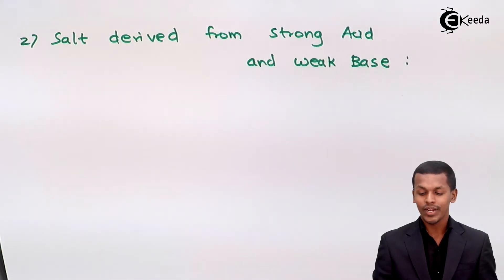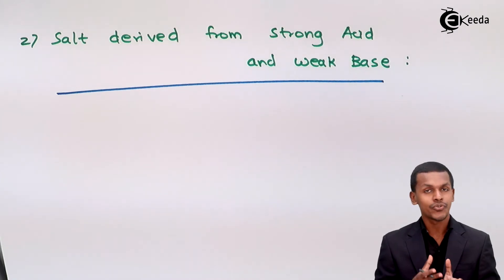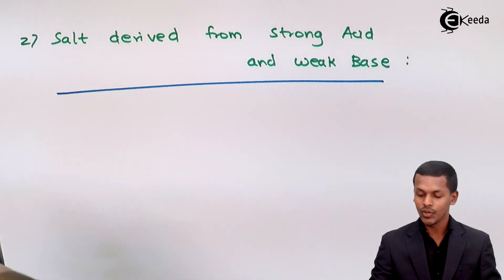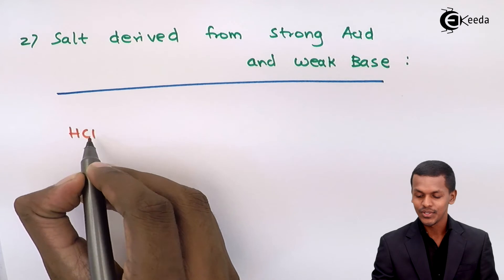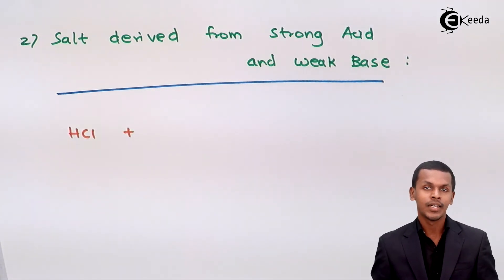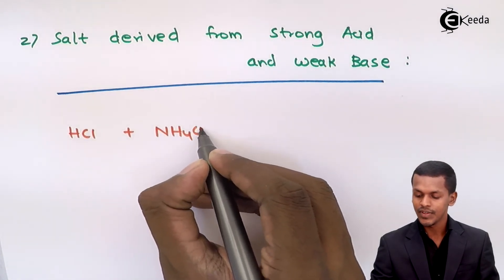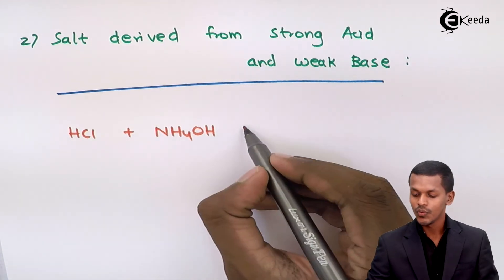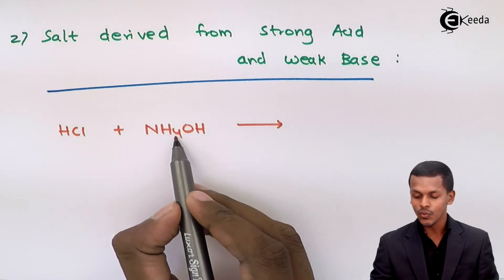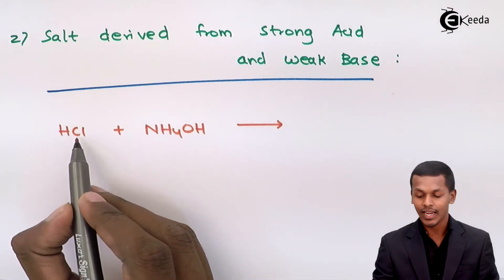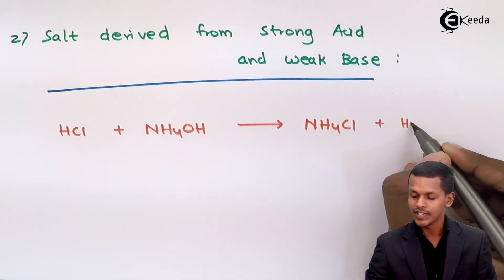The second type is salt derived from a strong acid and weak base. We take a strong acid like HCl and react it with a weak base such as ammonium hydroxide, NH₄OH. When HCl reacts with NH₄OH, the NH₄⁺ and Cl⁻ ions combine to give NH₄Cl along with H₂O.